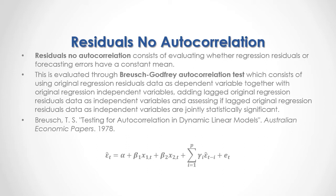As a formula, here we have the example of a multiple regression with two independent or explanatory variables, in which current period original regression residuals or forecasting errors are equal to a constant, plus a beta 1 coefficient multiplied by the first independent variable, plus a beta 2 coefficient multiplied by the second independent variable, plus the sum from the first to the p-th number of lags included within the Breusch-Godfrey autocorrelation test of the corresponding gamma coefficients multiplied by previous periods' original regression residuals or forecasting errors, plus this regression's residuals or forecasting errors.